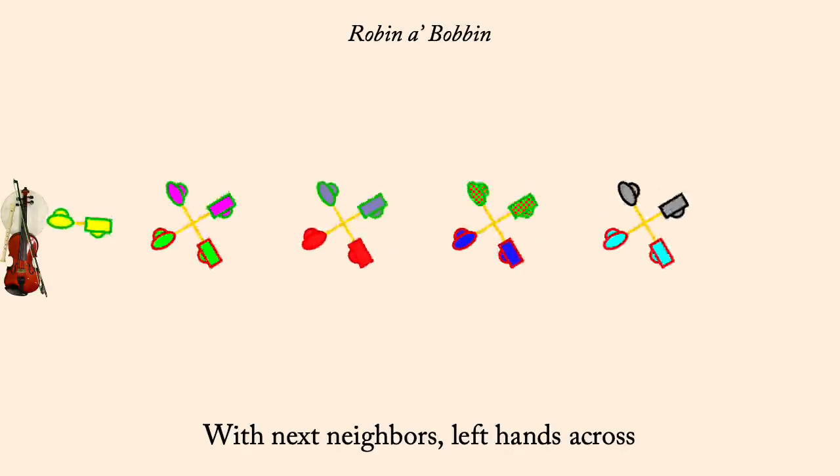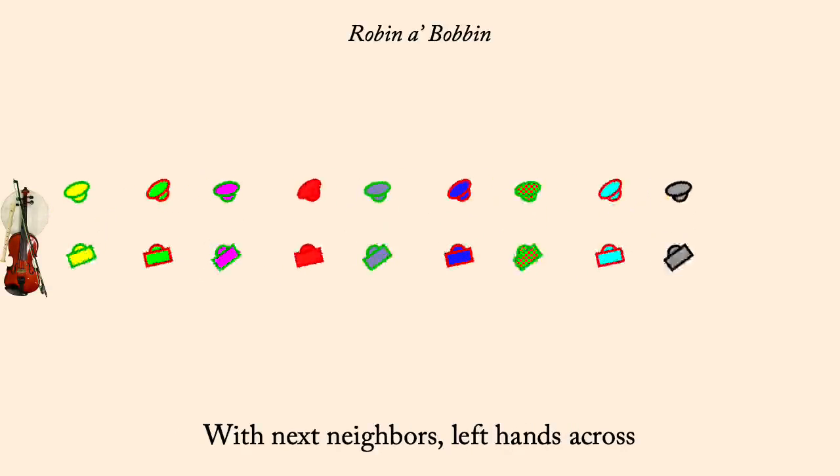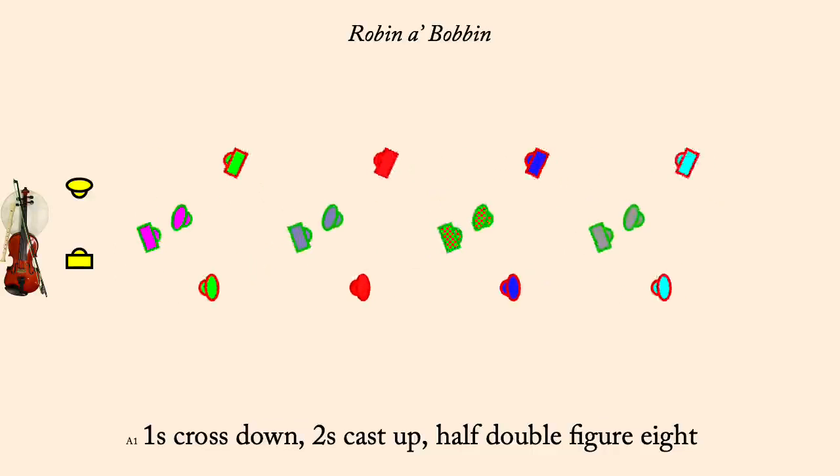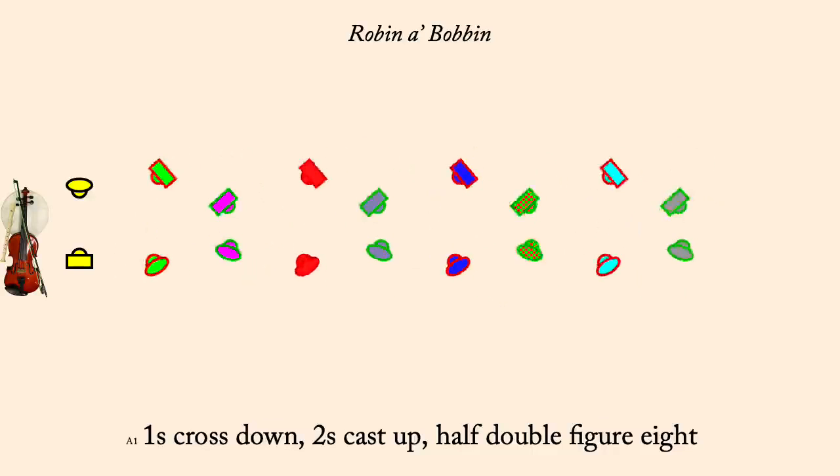Ones cross down, twos cast up, half double figure eight. Partner two-hand turn.